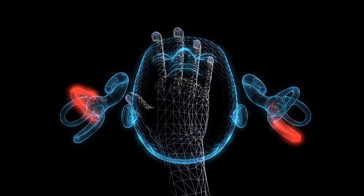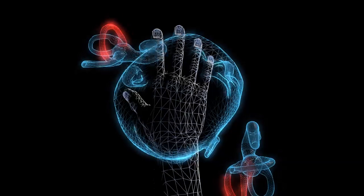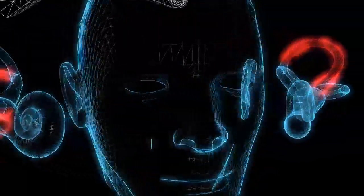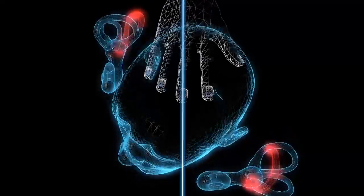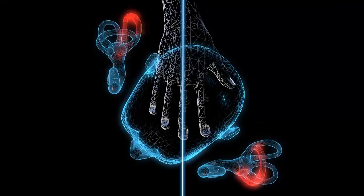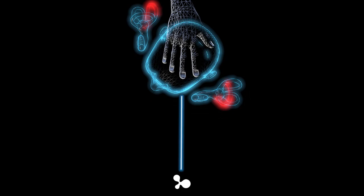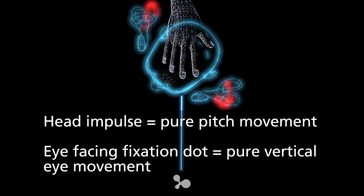So why do we move the head? When we move the head to the right, we're making sure that our head impulses are a pure pitch motion and not a combination of pitch and roll. By performing a pure pitch motion, it makes it a lot easier to perform your head impulses accurately. Even though we're moving the head to the right 35 to 45 degrees, we have the patient look back at the fixation dot — not towards their nose — so that the eye movement is pure vertical and not a combination of vertical and torsional eye movement.